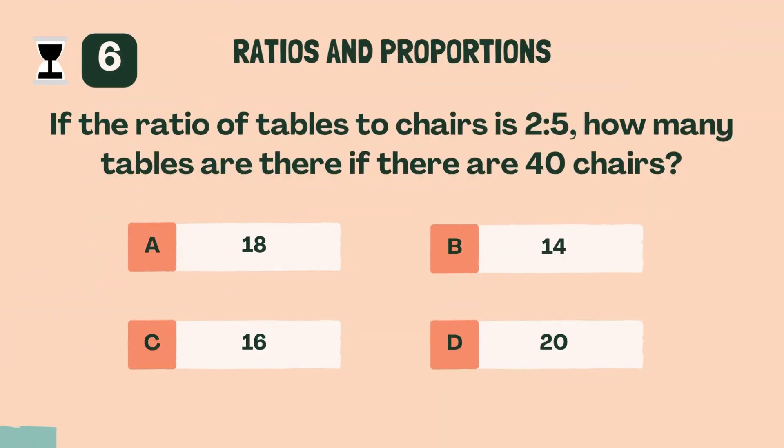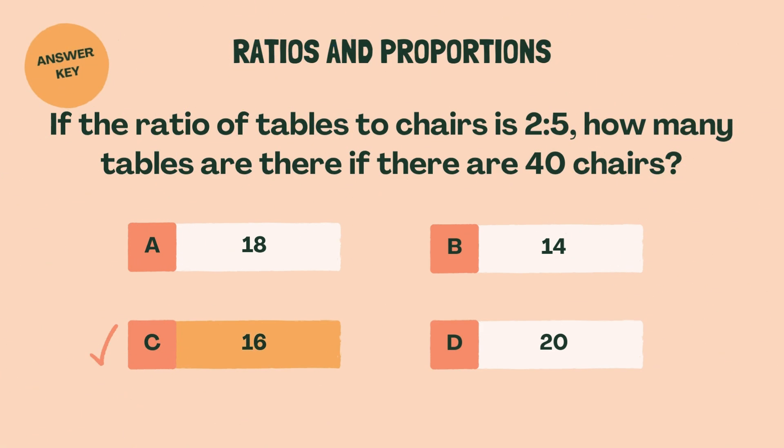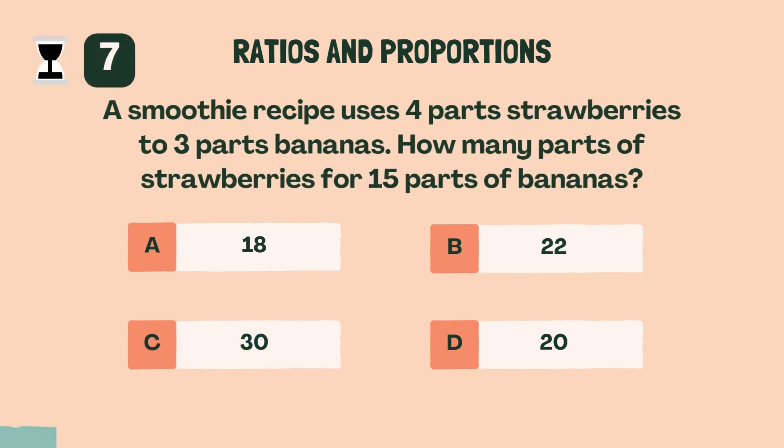If the ratio of tables to chairs is 2 to 5, how many tables are there if there are 40 chairs? C, 16.